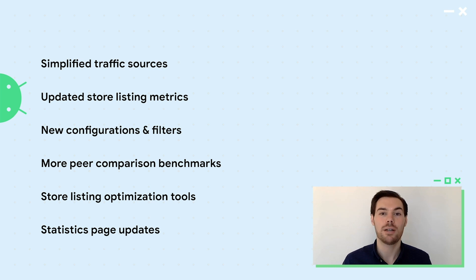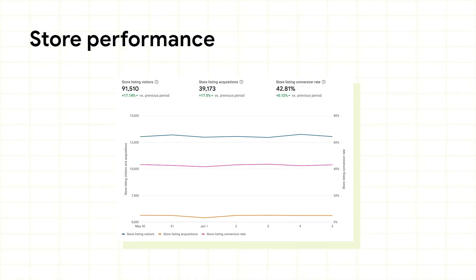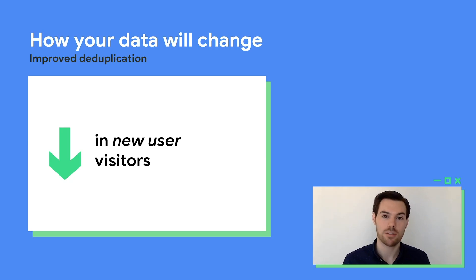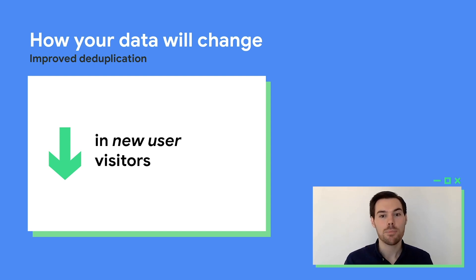Next, let's focus on the updated metrics: store listing visitors, acquisitions, and conversion rate. In the following section of the dashboard, you'll see how each of these metrics is trending and a percent change indicating whether they've gone up or down relative to the previous period. Store listing visitors are the number of users who saw your app store listing on a given day and didn't already have your app installed on any of their devices. Compared to the classic product, we've improved deduplication to better reflect how many unique opportunities you had to acquire a user. While most users will be counted once, some users will be counted multiple times if they discover your app in different ways, like a search and an off-site ad, during the same day.